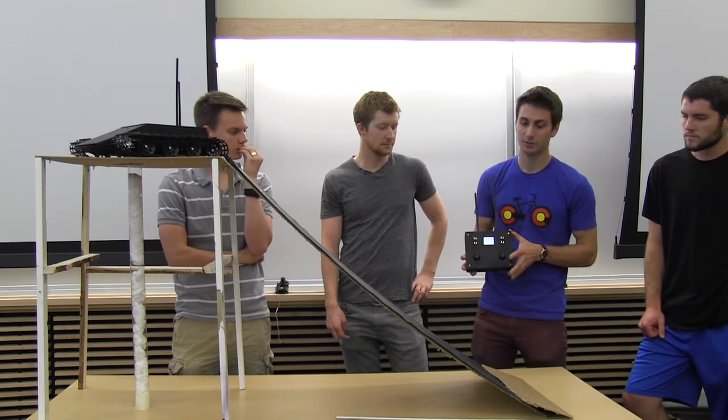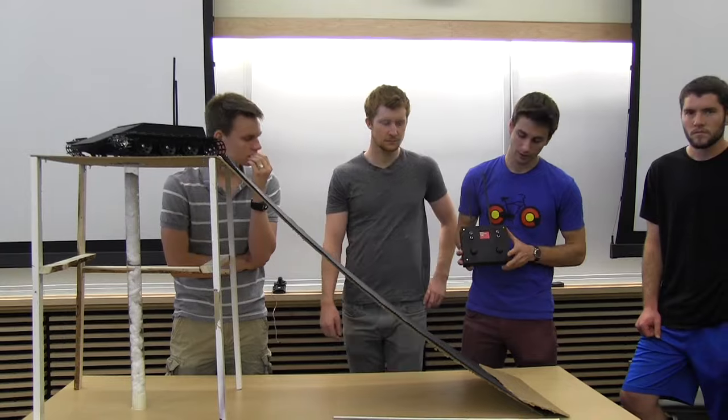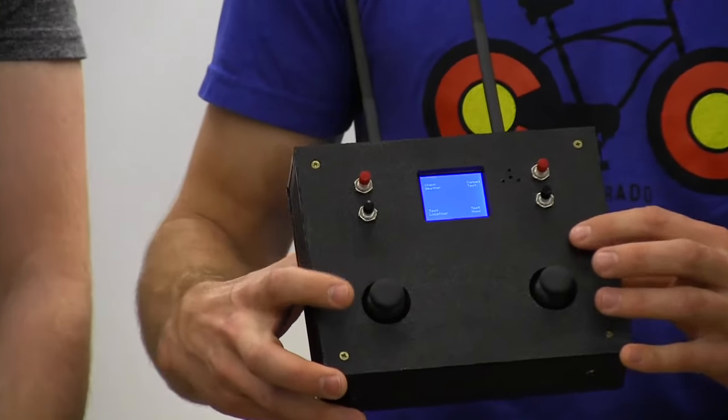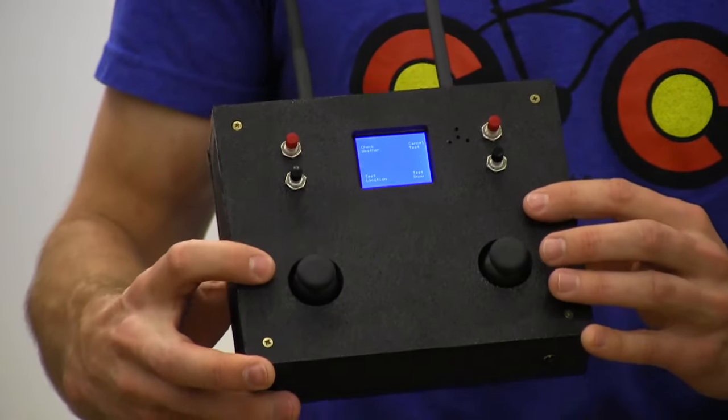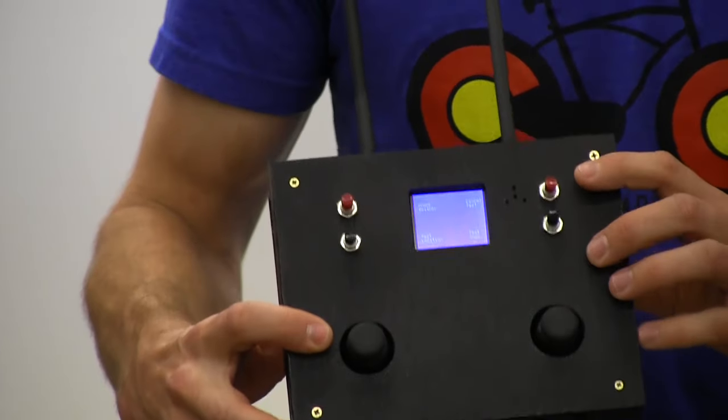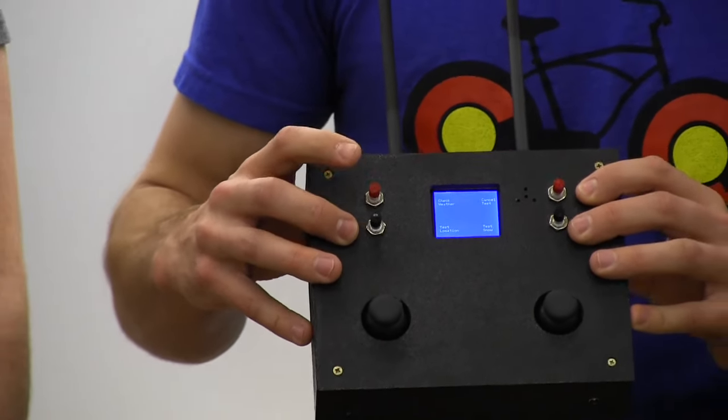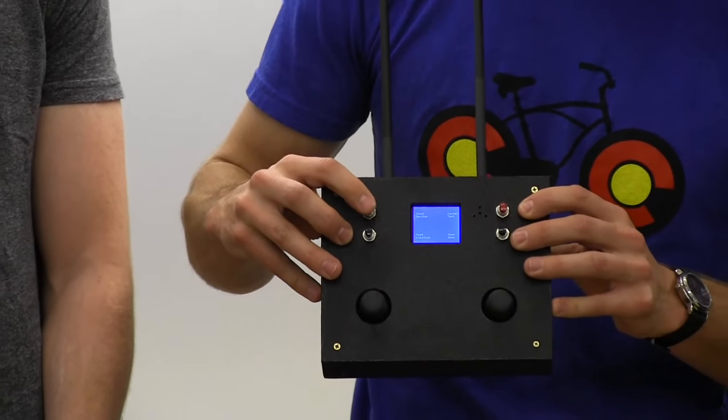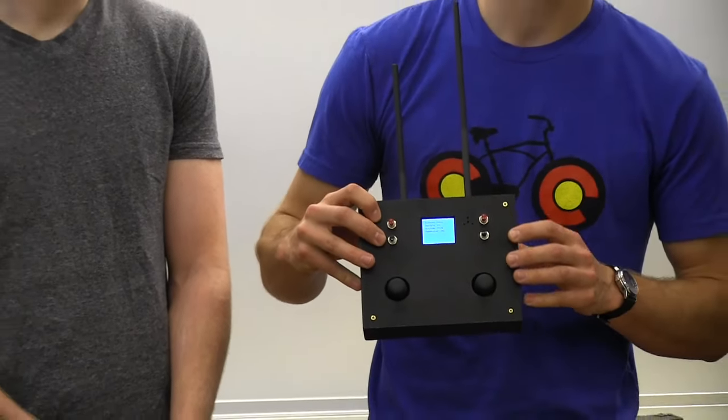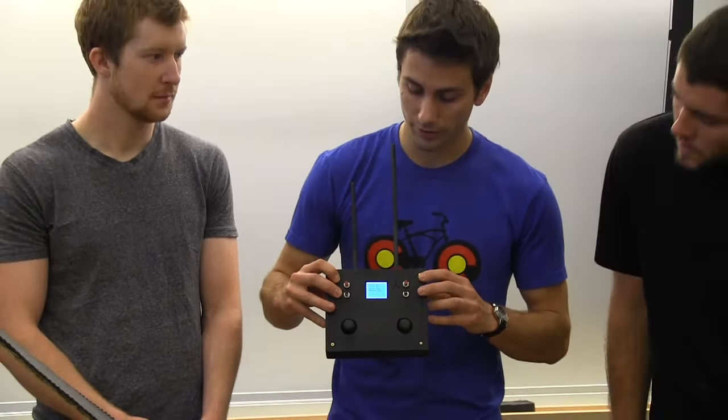Information is displayed to the user via this LCD screen. These two joysticks are used to control individually the left and right motors, and these buttons serve various purposes. For example, this red button will get weather data based on one of the sensors in the controller itself.